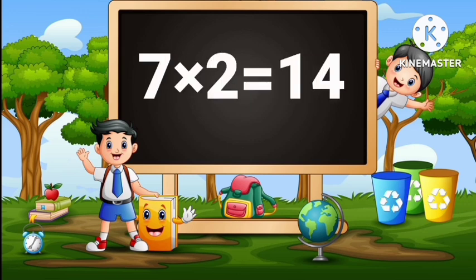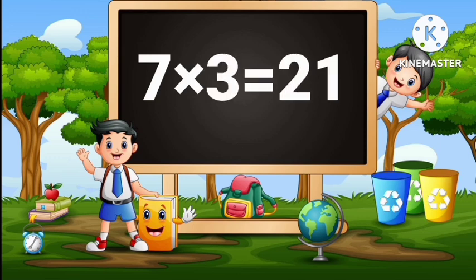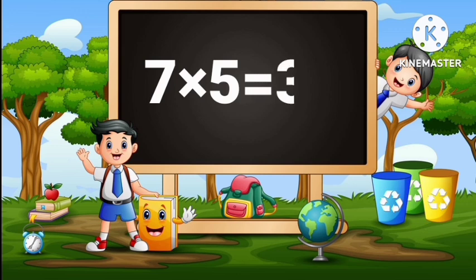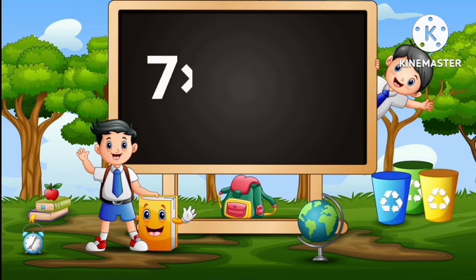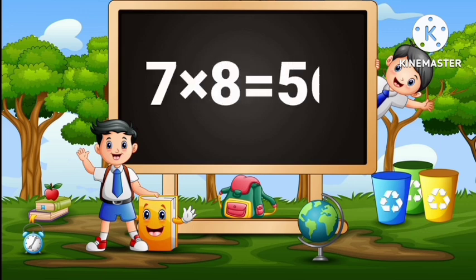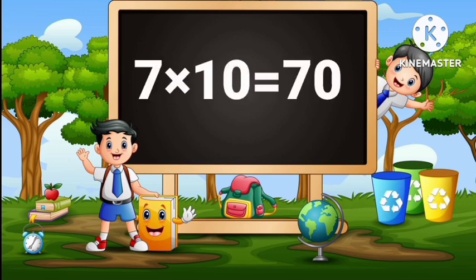Seven twos are fourteen. Seven threes are twenty-one. Seven fours are twenty-eight. Seven fives are thirty-five. Seven sixes are forty-two. Seven sevens are forty-nine. Seven eights are fifty-six. Seven nines are sixty-three. Seven tens are seventy.